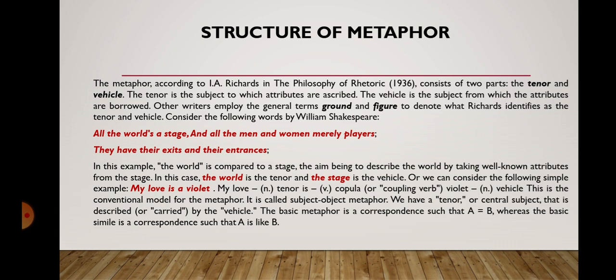Or consider the simple example: 'My love is a violet.' Here 'my love' is the tenor, 'is' is the coupling verb, and 'violet' is the vehicle. This is the conventional model for the metaphor, called the subject-object metaphor. We have a tenor or central subject that is described or carried by the vehicle. The basic metaphor is a correspondence such as A equals B, whereas the basic simile is a correspondence such that A is like B.